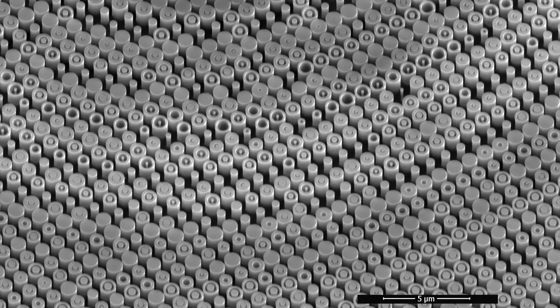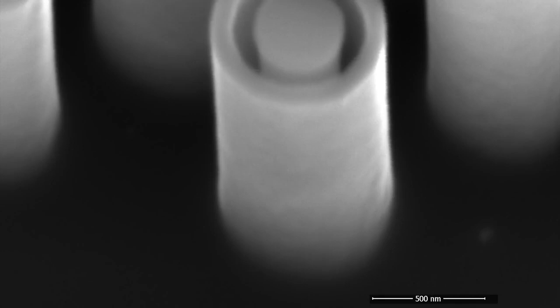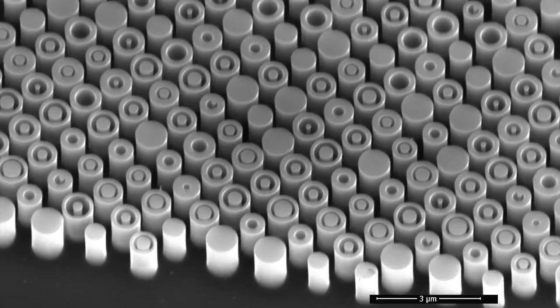The metal lenses are made of pixels we call meta-atoms. By using complex cross-sectional shapes, these meta-atoms are able to delay incoming light to a varying degree that depends on the wavelength.